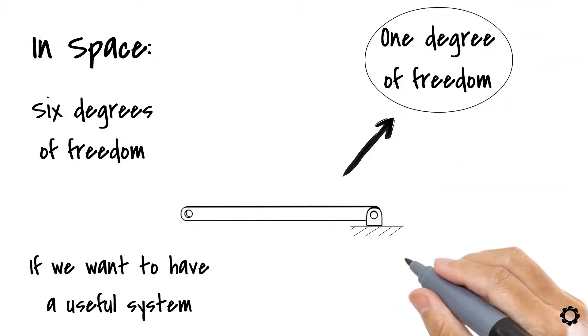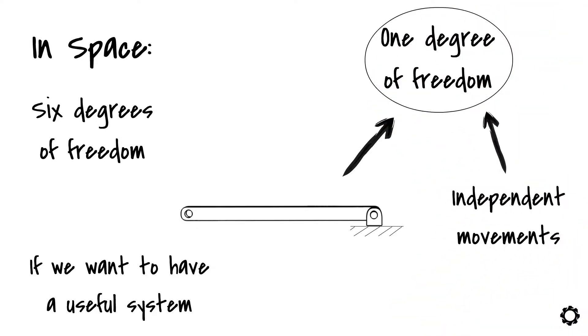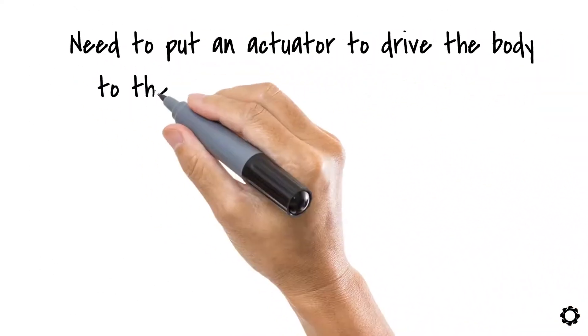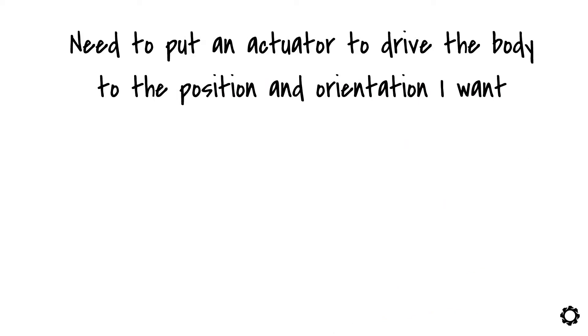These remaining degrees of freedom are independent movements, meaning that if I wanted to control these movements, I would need to put an actuator to drive the body to the position and orientation I want.